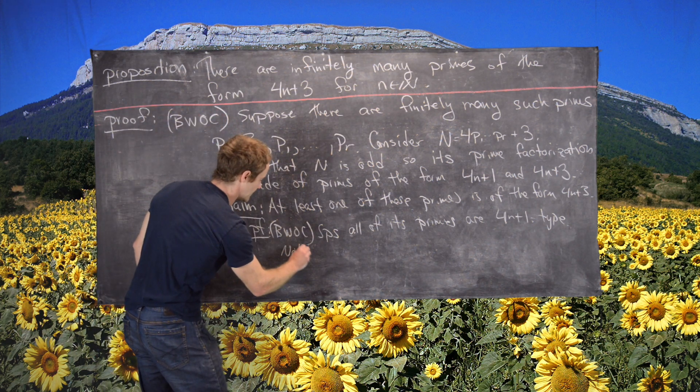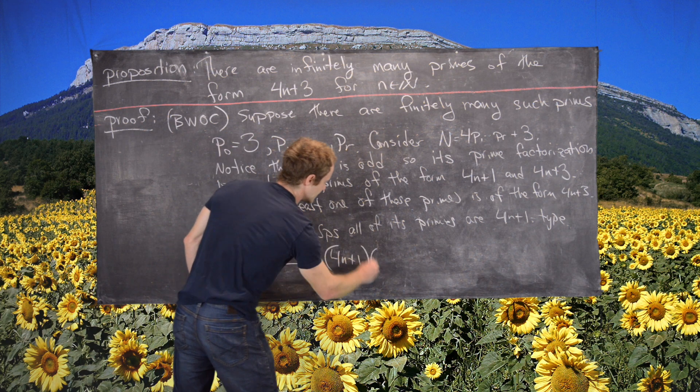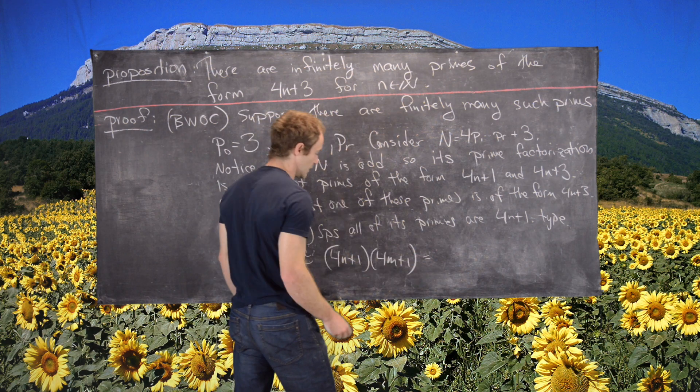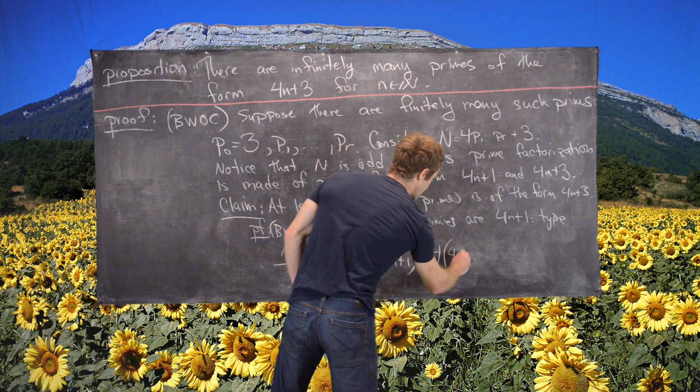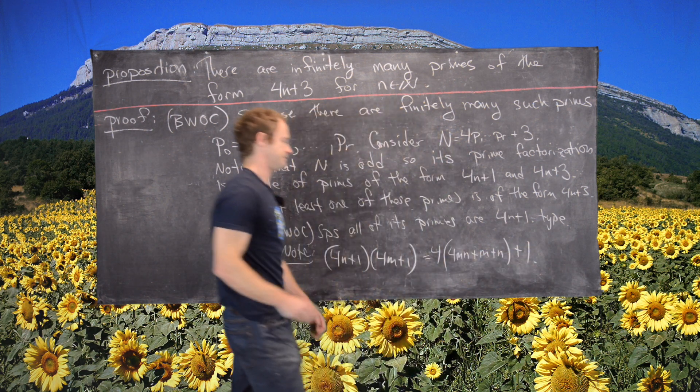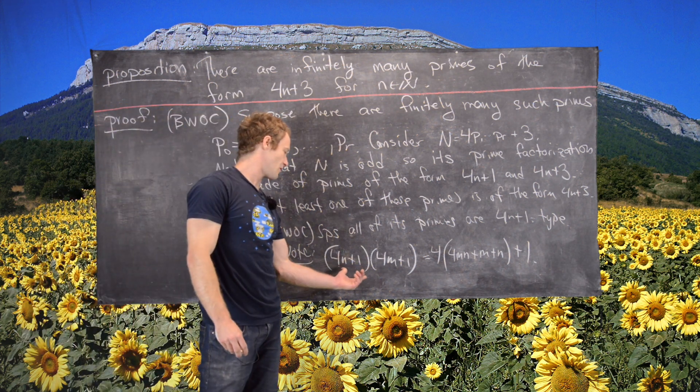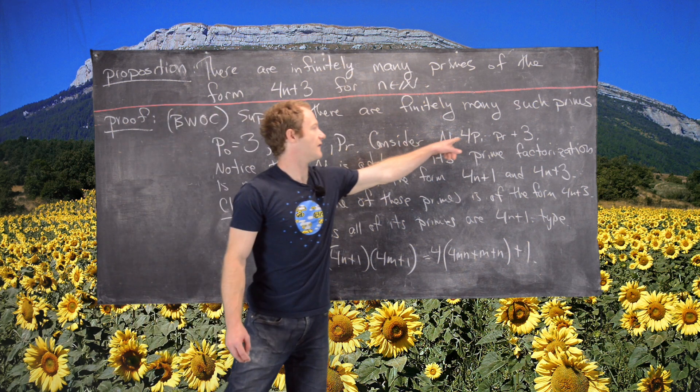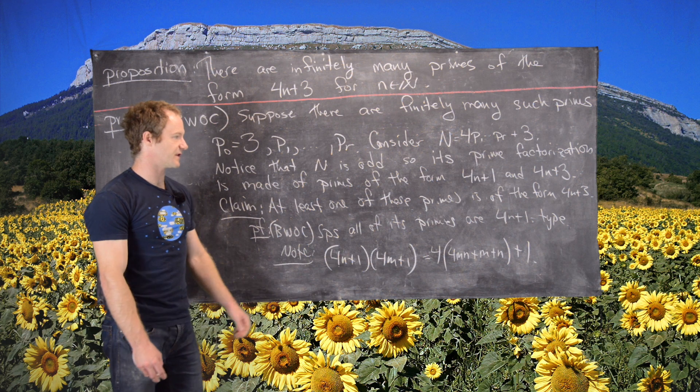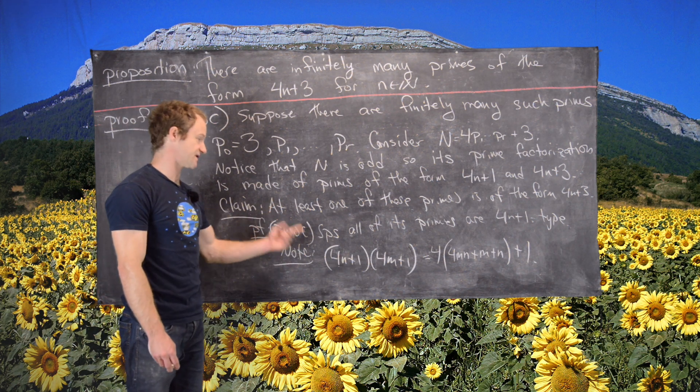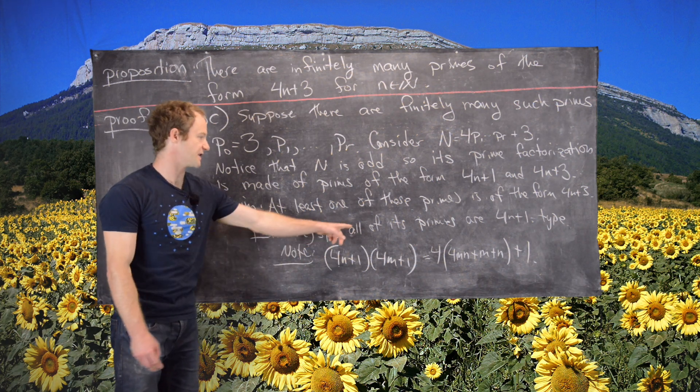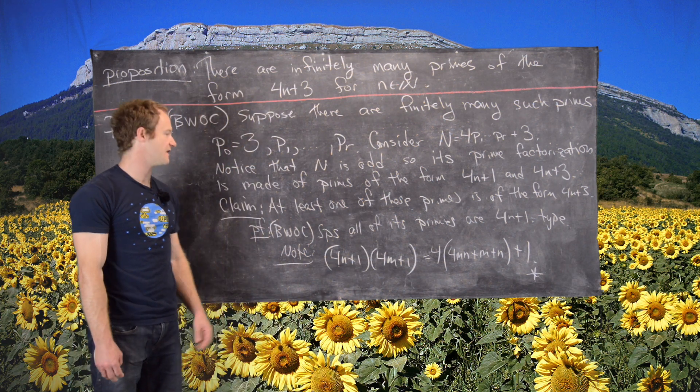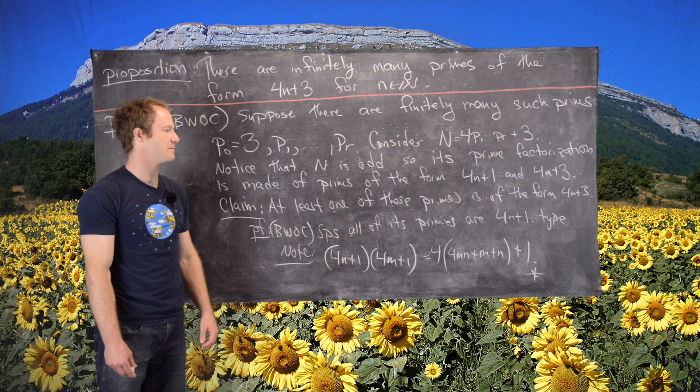But then notice the following: if you take 4n plus 1 times 4m plus 1, say we've got two primes of that form or really two numbers of that form, notice that what we're going to get is 4 times the product 4mn plus m plus n plus 1. So in other words, numbers of the form 4n plus 1 are closed under multiplication. So that means we'll never get a number of the form 4n plus 3 using only numbers of the form 4n plus 1, which means this is a contradiction. So this claim is true - at least one of these primes is of the form 4n plus 3.